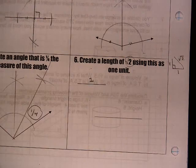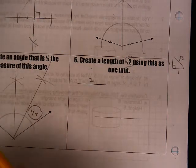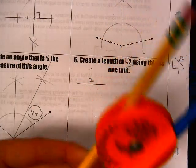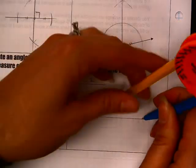But before I do that, I need 90 degrees. So the only way that you can create 90 degrees is to do a perpendicular bisector.